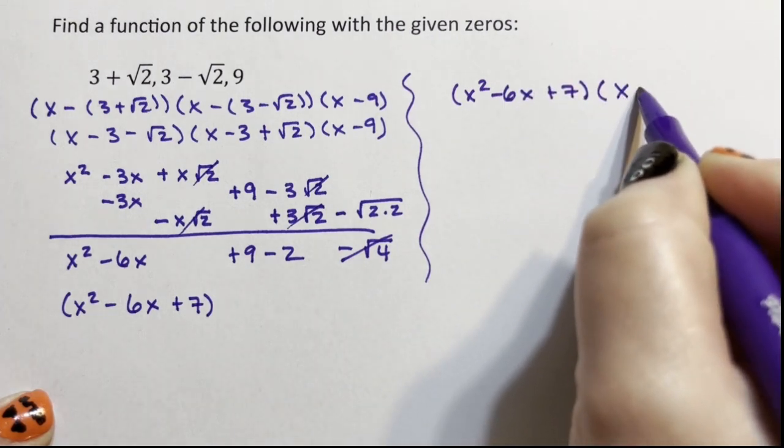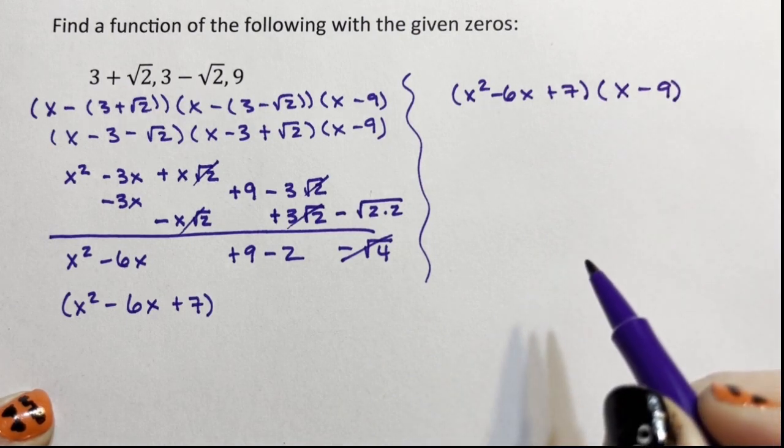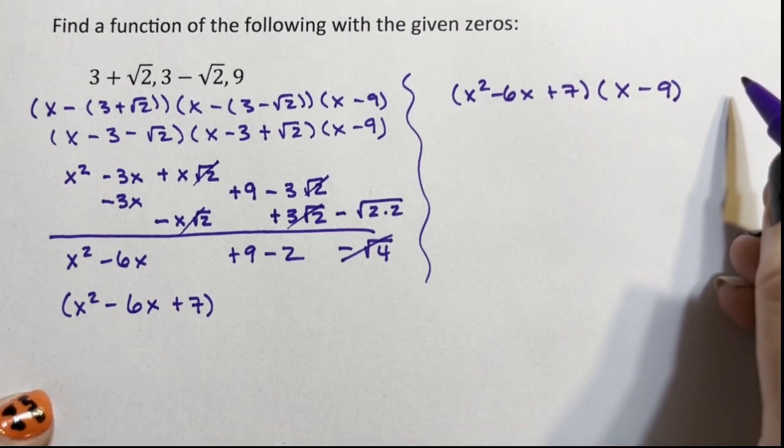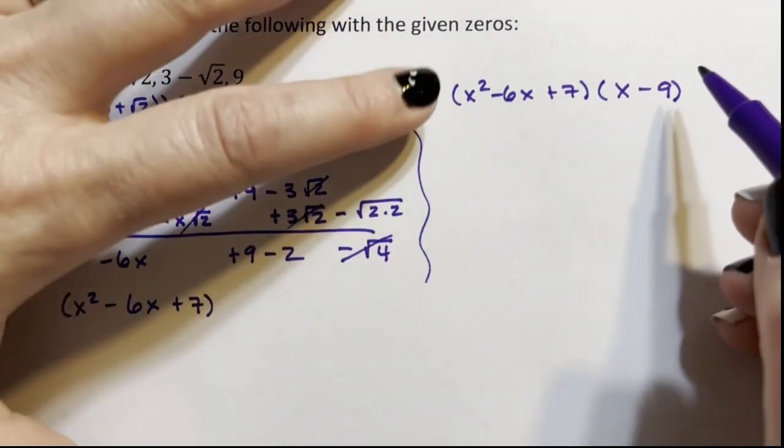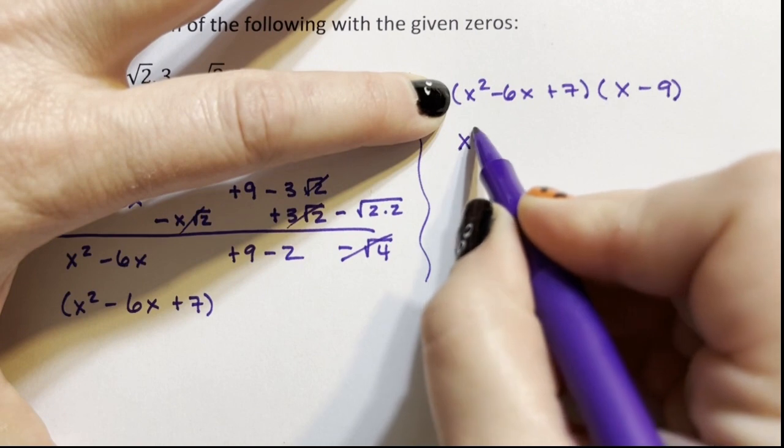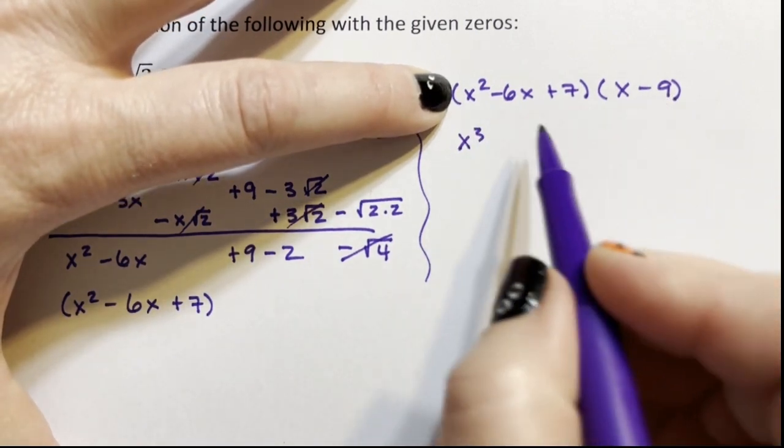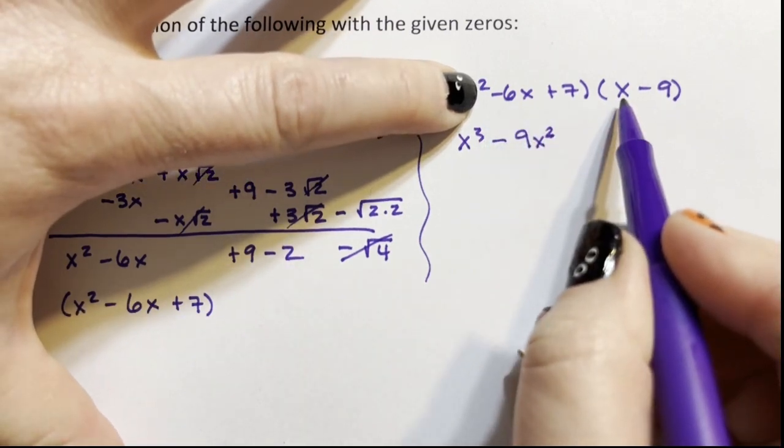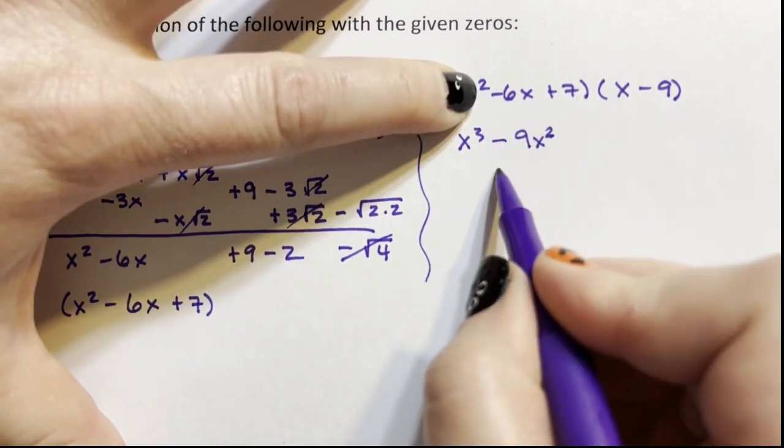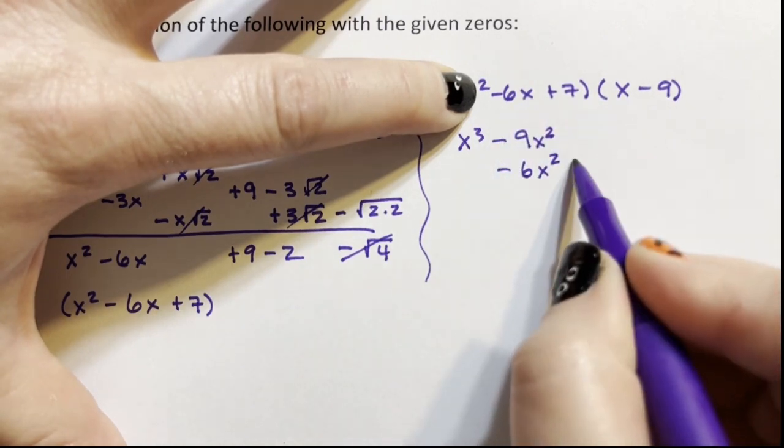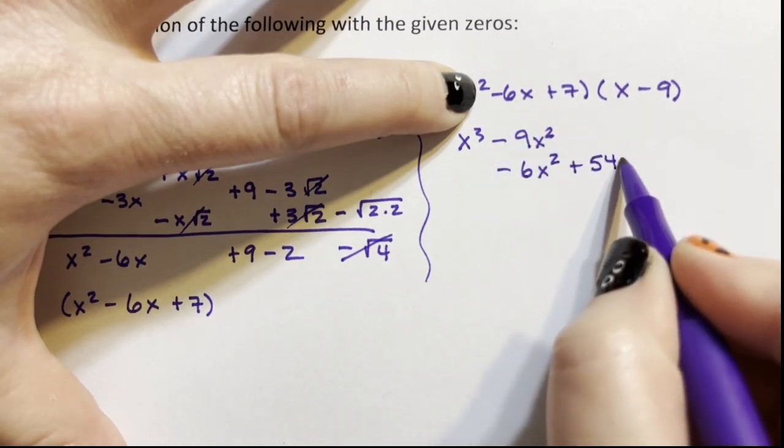So x minus 9. So I'm going to do the same thing. I'm going to take this x squared times x, which is x cubed. x squared times 9, which is minus 9x squared. Negative 6 times x, which is negative 6x squared. Negative 6x times 9, which is a plus 54x.